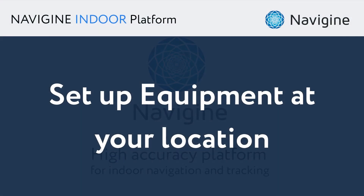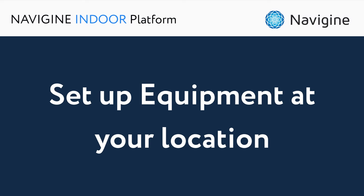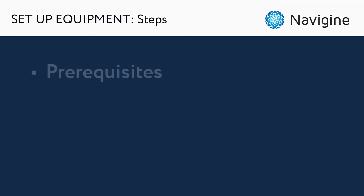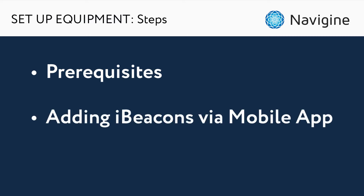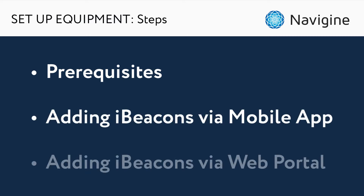In this video you will learn how to configure equipment to make your indoor navigation system work. It consists of three parts: prerequisites, adding iBeacons via mobile app, and adding iBeacons via web portal. As a result you will have indoor navigation working in the Navigin mobile application.